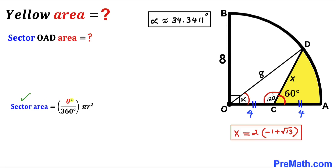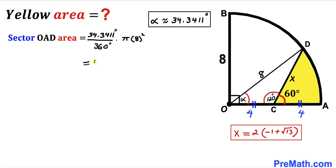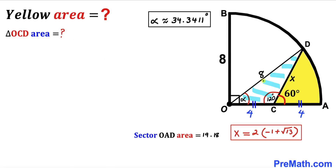Now we are going to calculate the area of the sector. Recalling the sector area formula: area equals theta divided by 360 degrees times pi r squared, where r is the radius. In our case angle theta is 34.3411 degrees and radius is 8. Filling in the blanks and simplifying the right hand side, the sector area is approximately 19.18 square units.